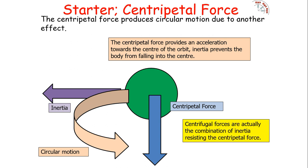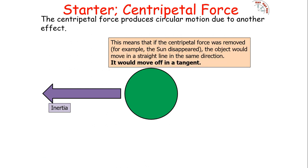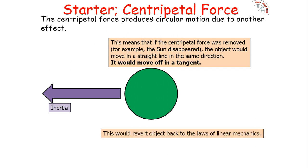Centrifugal forces are actually a combination of inertia resisting the centripetal force. This means if the centripetal force were removed — for example if the Sun somehow disappeared — the object would move in a straight line in the same direction, because there is no longer a resultant force pulling it towards the centre of the circle. So it would move off at a tangent, reverting the object back to the laws of linear mechanics covered previously.